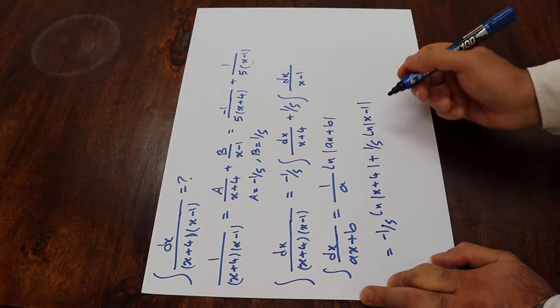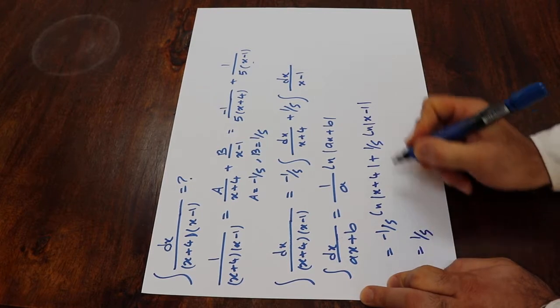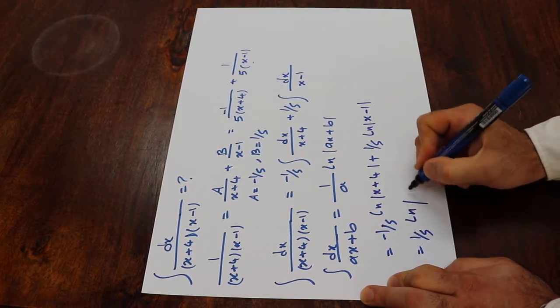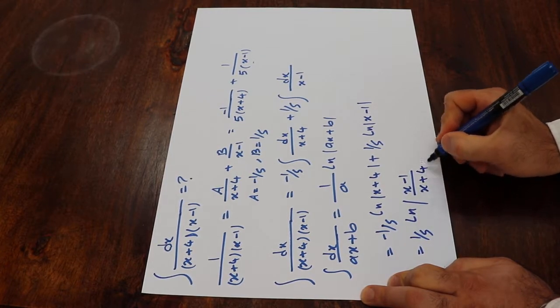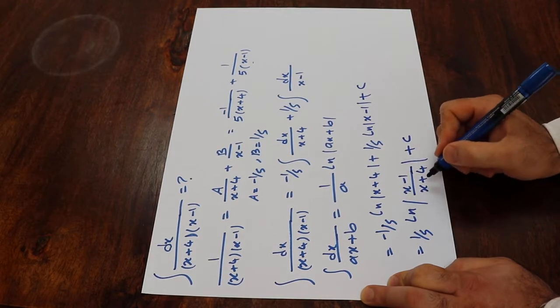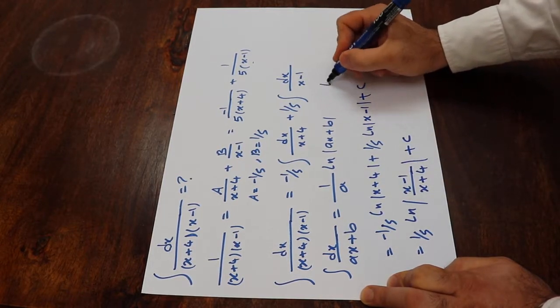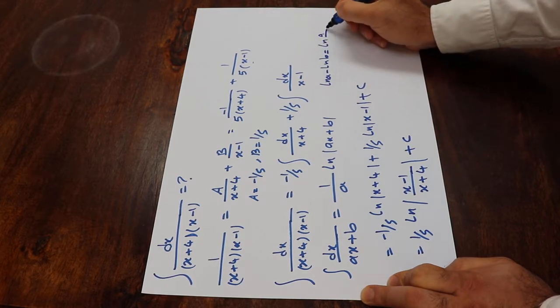You can as well write it as, you can for example factor 1 divided by 5 and write it as ln x minus 1 divided by x plus 4. Here, there is a constant of the integral plus the constant of the integral. Because from algebra, you should know that ln a minus ln b is equal to ln a divided by b.